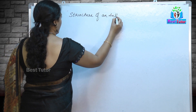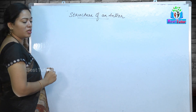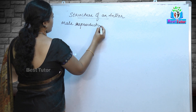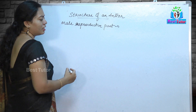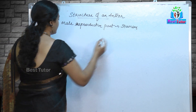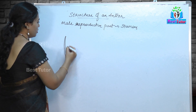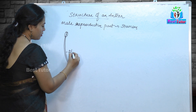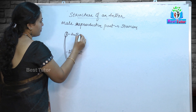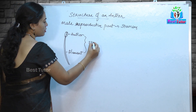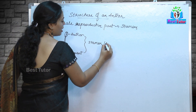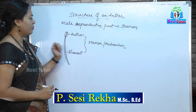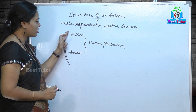The anther is the male reproductive part present at the tip of the stamens. If you examine, they will have a long filament and a bilobed structure — this is the filament and this is the anther. This entire thing we call a stamen, which also forms the androecium of a flower.